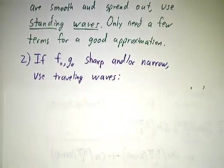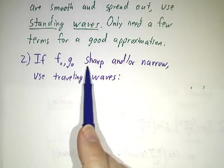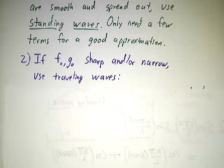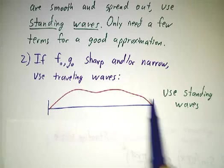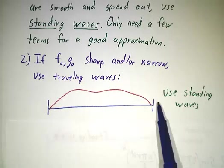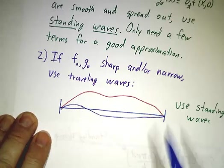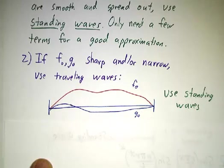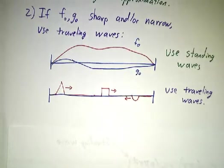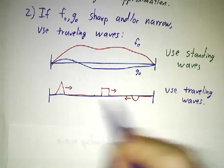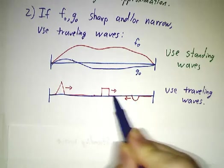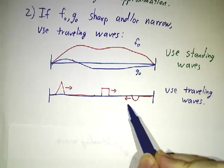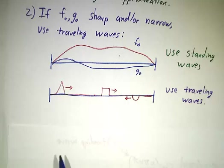On the other hand, if your initial conditions are very sharp, then you would need lots and lots and lots of terms to do things in terms of standing waves. Same thing happens if they're very narrow. And then it's better to use traveling waves. So if your initial conditions, if this was F0 and if G0 was something similar, nice and smooth and spread out, you'd be best off using standing waves. But if your initial conditions are a few spikes that are just moving side to side, this is naturally described in terms of traveling waves. You can write this in terms of traveling waves and you can write this in terms of standing waves, but it doesn't work very well. This really wants to be described with traveling. This really wants to be described with standing.